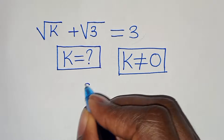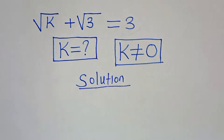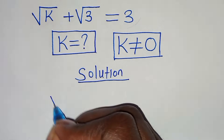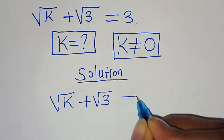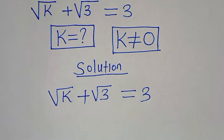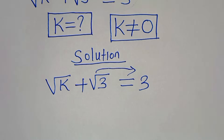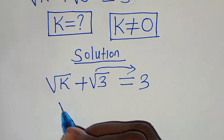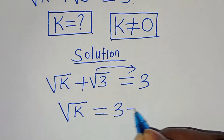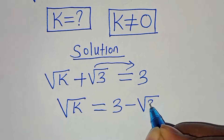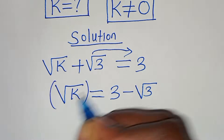Now let's provide the solution. We have the square root of k plus square root of 3 equals 3. The first step is to take square root of 3 to the right hand side, so that we have square root of k equals 3 minus square root of 3.